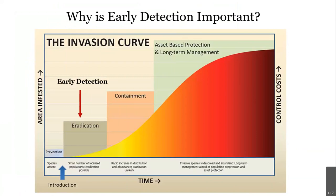The invasion curve further emphasizes the importance of enhancing early detection efforts. The graph signifies various stages of invasive species control effort based on population size — there's a direct correlation between the size of an infestation and time. Although preventing a species from invading in the first place is the most effective strategy, if invasives are discovered before population sizes grow and spread, it significantly increases our chances of suppressing or possibly eradicating the species — and that's where early detection comes in.